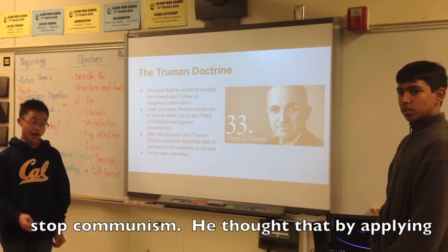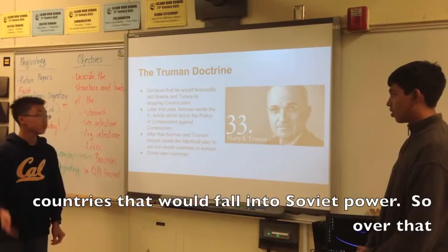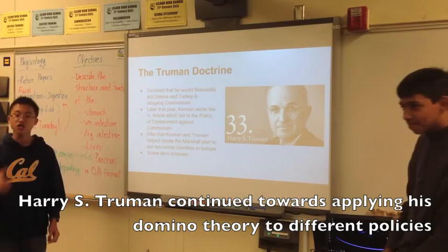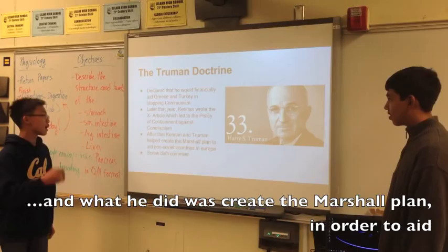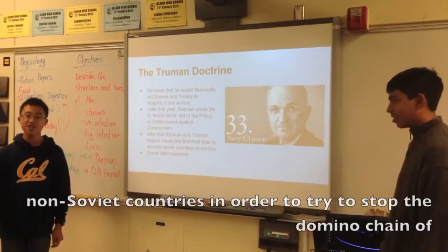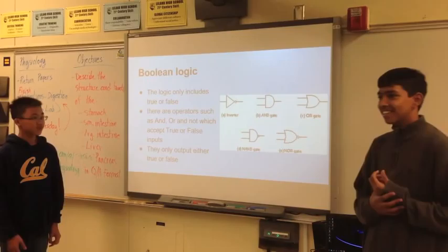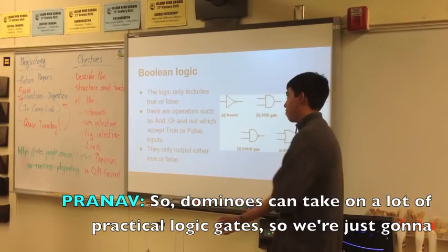In politics, this has been applied broadly. For one example, we go to the Truman Doctrine, which is a Cold War policy by Harry S. Truman. What he stated was that he would financially support Greece and Turkey in order to try to stop the Domino Theory — he thought that if they stopped the flow of communism where it was, then they would stop a domino effect, a chain of different countries falling to the Soviet Union.